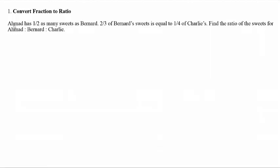For question 1: Ahmad has half as many sweets as Bernard. Then 2 thirds of Bernard's sweets is equal to 1 quarter of Charlie's. We need to find the ratio of the sweets for Ahmad to Bernard to Charlie.